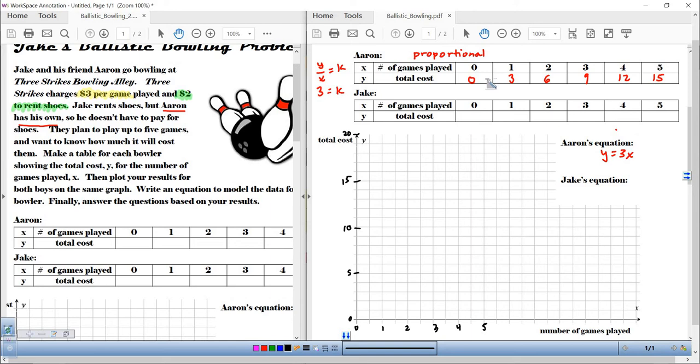So let's go ahead and plot these points for Aaron. And I'm going to use red since that's what I used to fill it in. So 0 games was $0. 1 game was 1, 2, 3. 2 games was 1, 2, 3, 4, 5, 6. 3 games was 1, 2, 3, 4, 5, 6, 7, 8, 9, right? 4 games was 1, 2, 3, 4, 5, 6, 7, 8, 9, 10, 11, 12, and 5 games is going to go up 3 more. There's 12, 13, 14, 15, right?